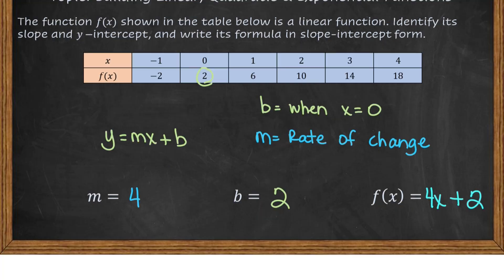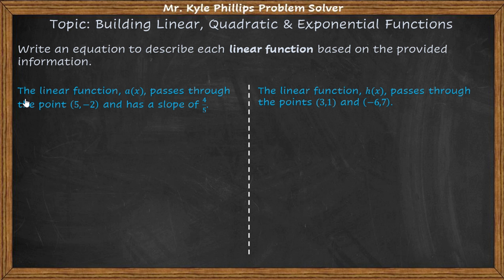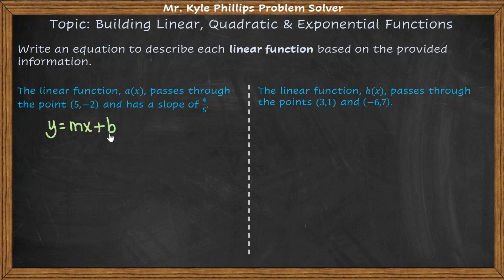Let's look at some other ways to build a linear function. In this example, the linear function a of x passes through the point five, negative two, and it has a slope. We have y equals mx plus b, so here's our slope and y-intercept. We have a slope of four-fifths but we don't know the y-intercept because we don't have an x value of zero. So while slope-intercept form is one way to write a linear function, it doesn't really help us when we're given only a point and a slope. There is another way to write a linear function and this is called point-slope.